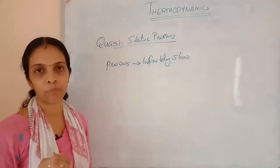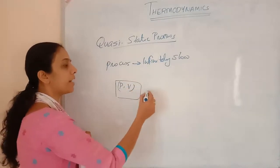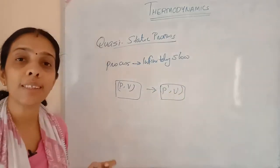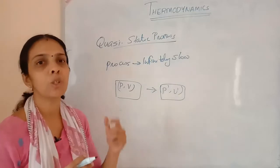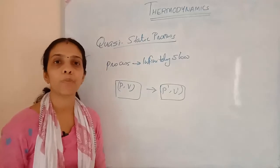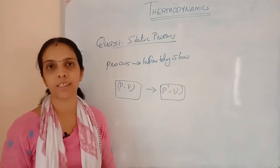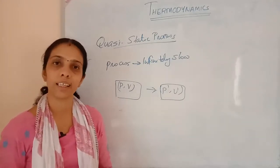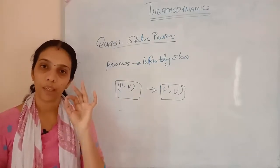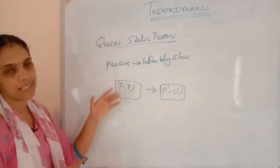For example, suppose a gas has pressure and volume PV, and after some time it changes to P-dash V-dash. But the process is very slow — we can't identify that change. Pressure, volume, temperature — all those changes happen so slowly we can't detect them quickly. That is called a quasi-static process.